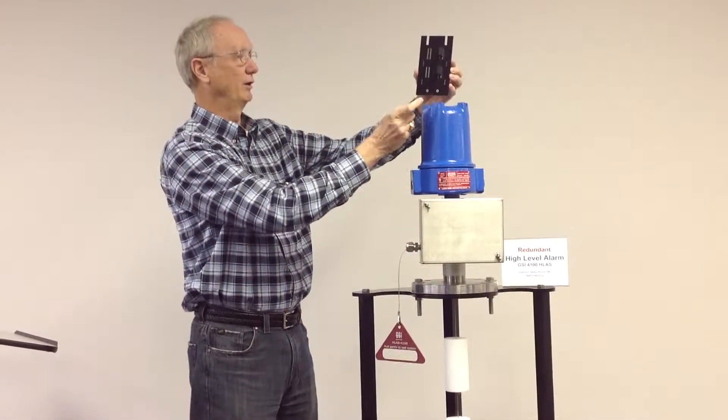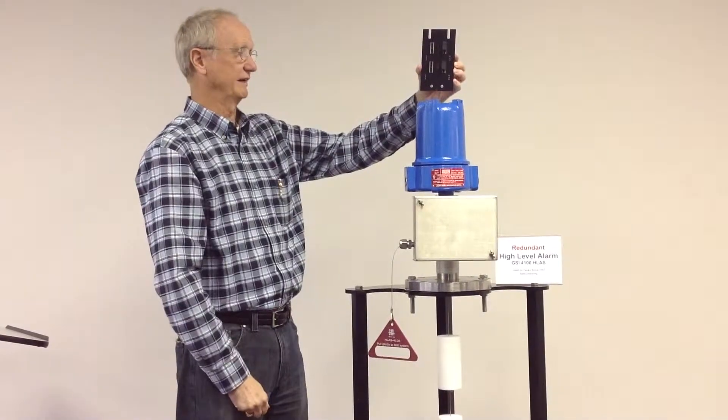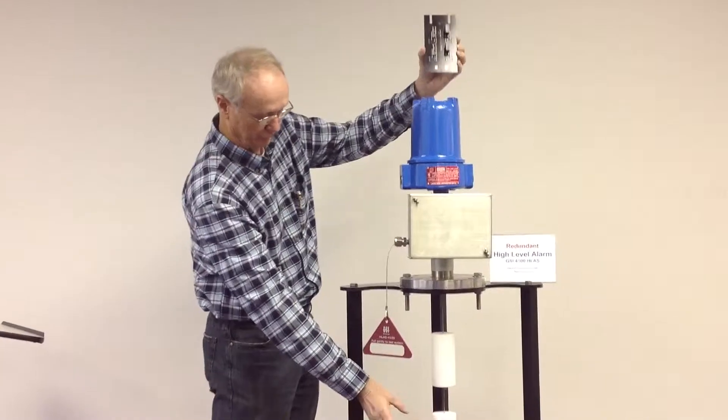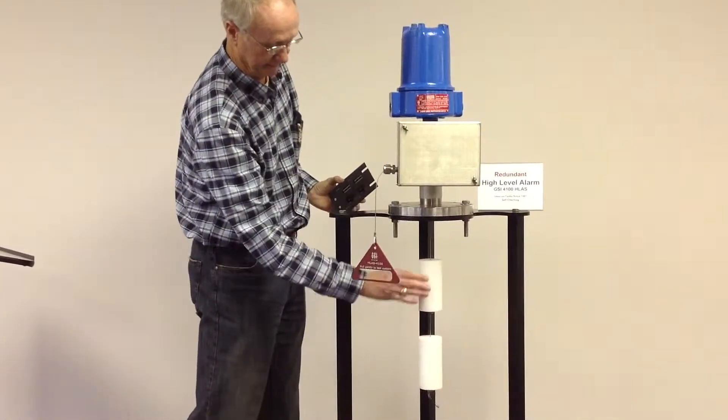When you have reed switches in each of the four sockets, you have a totally redundant switch for two displacers - one for high and one for high-high.